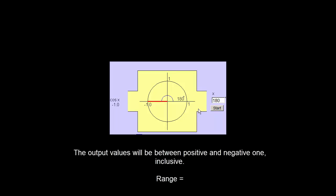So our range is going to be values between negative 1 and positive 1, including negative 1 and positive 1. So we're going to use the brackets.